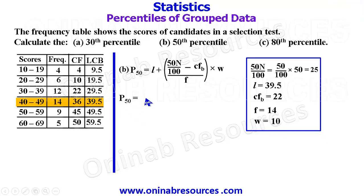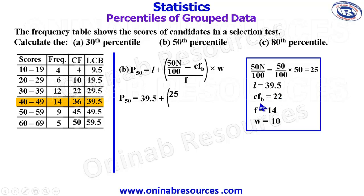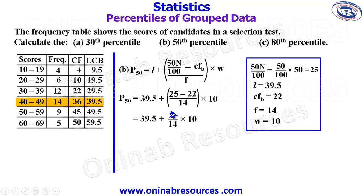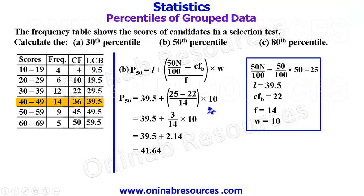We substitute to get the 58th percentile. L is 39.5, plus open bracket, 50N over 100 is 25, minus the cumulative frequency before the median class which is 22, divide by the frequency of the median class 14, multiplied by 10. This is 39.5 plus 3 over 14 times 10. The 3 over 14 times 10 gives 2.14. Adding it to 39.5, we have 41.64, representing the 58th percentile, as well as the median of this distribution.